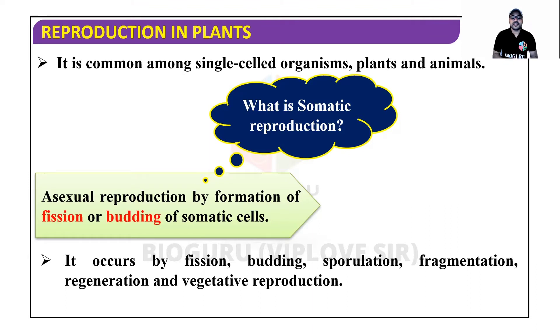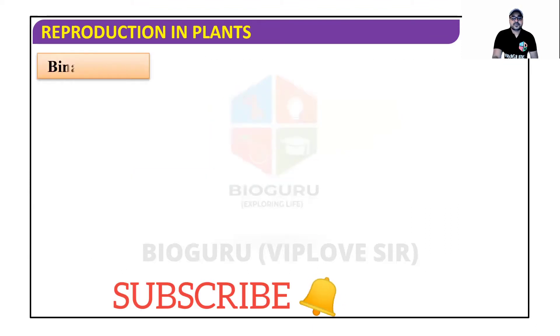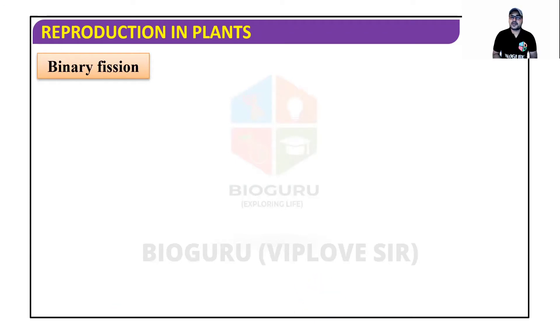Asexual reproduction occurs by fission, budding, sporulation, fragmentation, regeneration, and vegetative reproduction. Asexual reproduction in plants is specifically called vegetative reproduction.